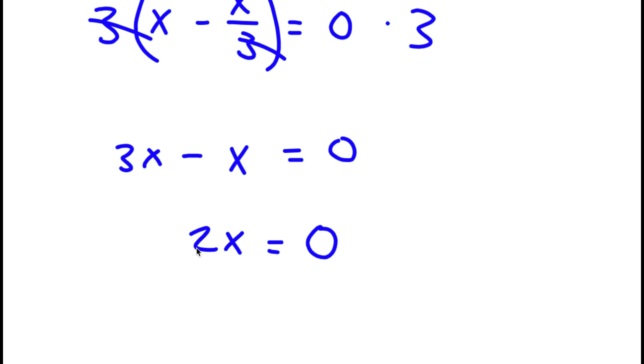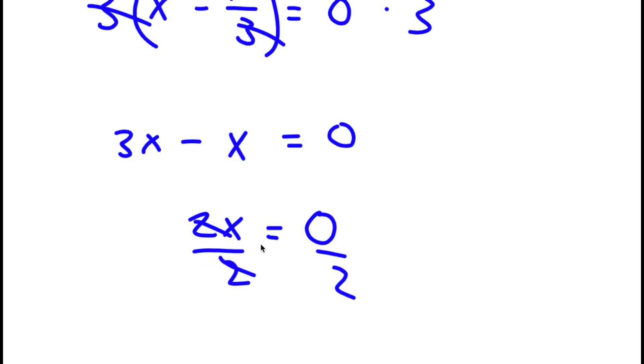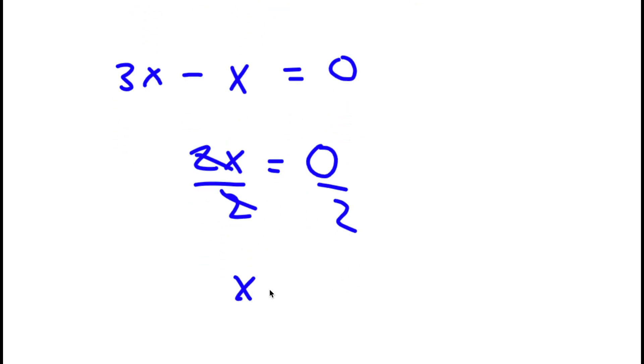So I have 2x equals 0. To solve this, I'm going to divide both sides by 2. These two cancel out, and I'll be left with x is equal to 0 divided by 2, which is 0.